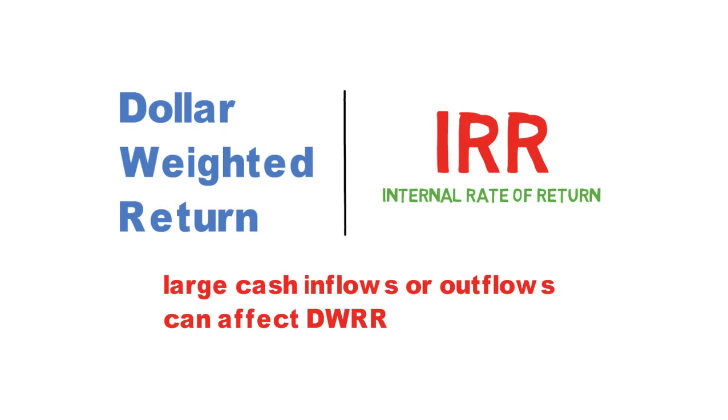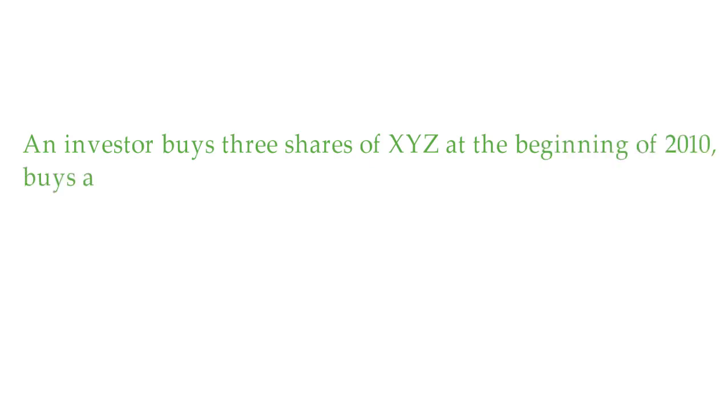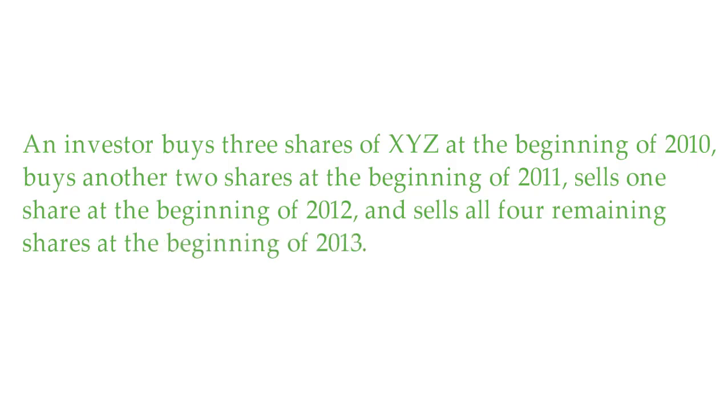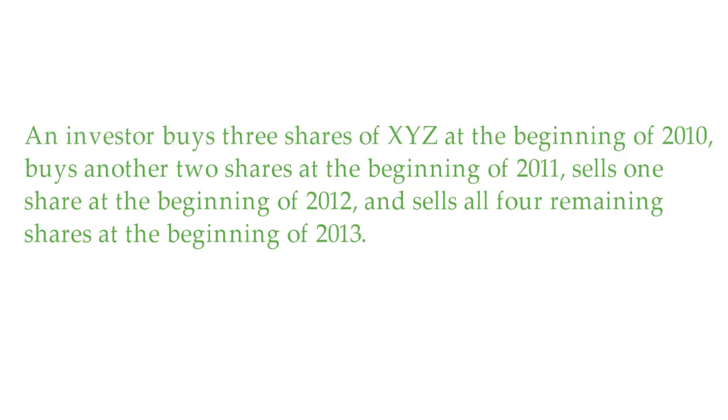Let's take an example. An investor buys three shares of XYZ at the beginning of 2010, buys another two shares at the beginning of 2011, sells one share at the beginning of 2012, and sells all four remaining shares at the beginning of 2013.